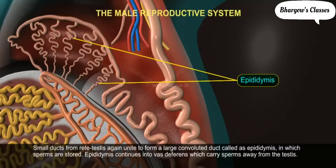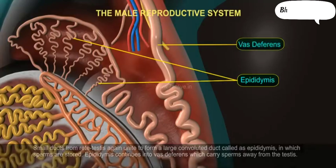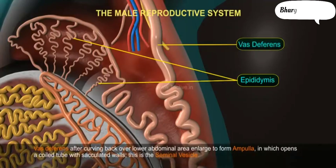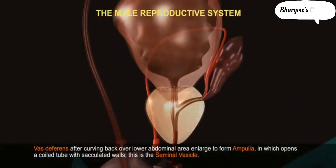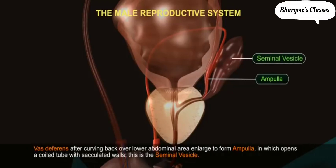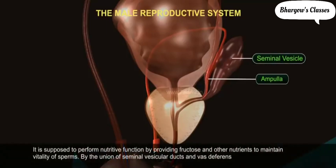The epididymis continues into the Vas Deferens, which carries sperms away from the testes. The Vas Deferens, after curving back over the lower abdominal area, enlarges to form an ampulla into which opens a coiled tube with glandular walls — this is the seminal vesicle. It performs a nutritive function by providing fructose and other nutrients to maintain the vitality of sperms.